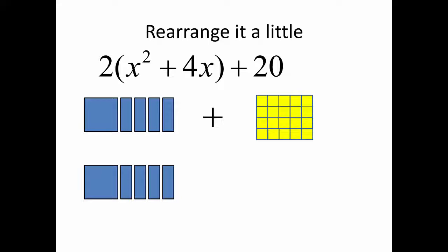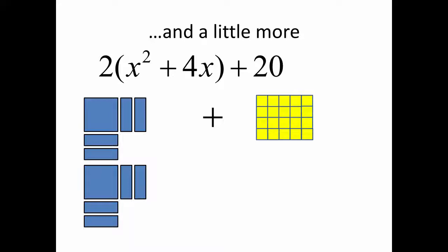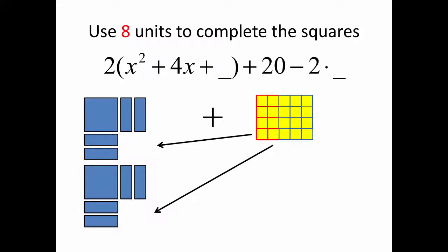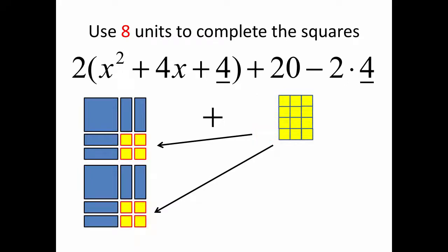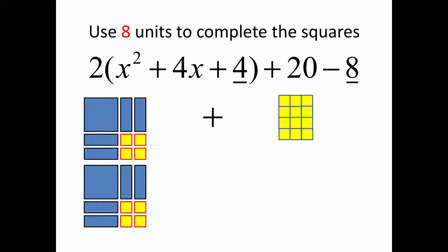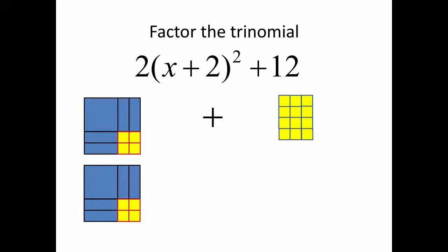We're going to turn each of those into a square with a notch. Now we will have to take not four units to complete one of the squares, but a total of eight units — we have to complete both squares. And now we are left with two x-plus-2 squares plus twelve left over. That's the geometric model.